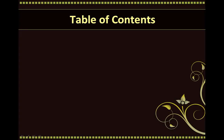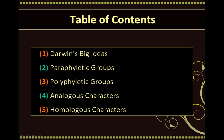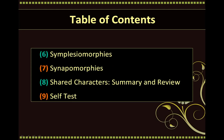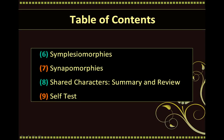In this animation, we will cover Darwin's big ideas, paraphyletic and polyphyletic groups, analogous and homologous characters, symplesiomorphies and synapomorphies. This animation will end with a review and self-test section in which you will have the chance to test yourself on the content presented in this animation.